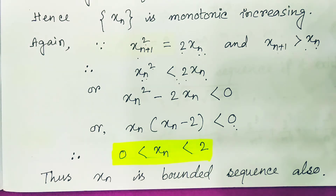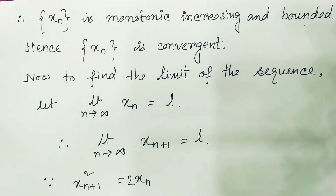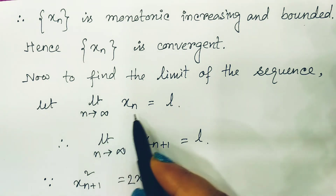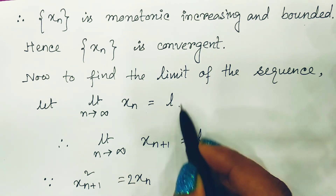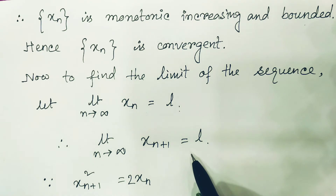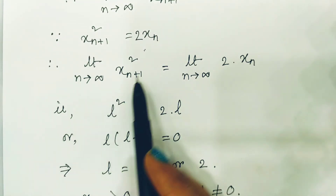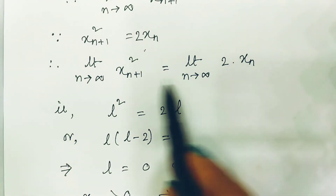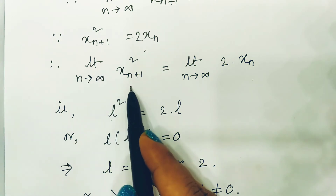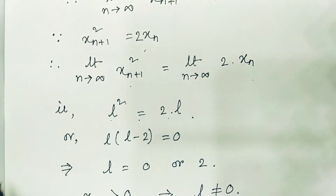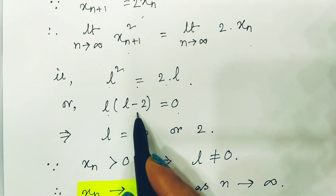Now that we know it is convergent, we find where it converges. Let the limit as n tends to infinity of xn equal L, a finite value. Since the limit of xn+1 also equals L, taking the limit on both sides of xn+1² = 2·xn gives L² = 2L, so L² - 2L = 0.